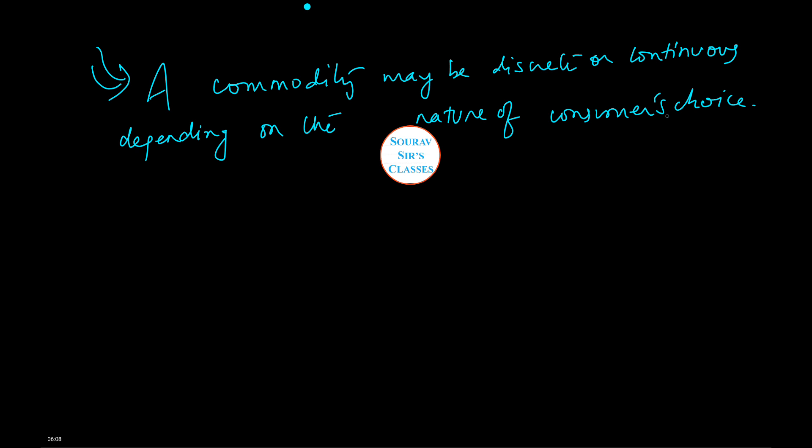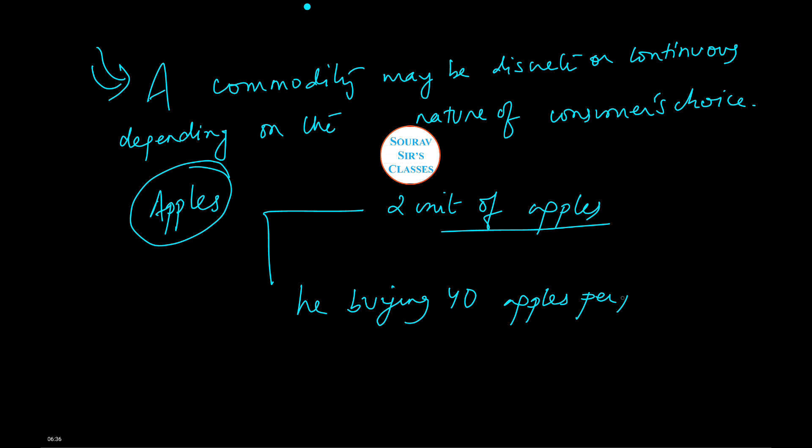Now what do we mean by this? Let me tell you. Say, for example, apples. So I am taking the example of apples. Now if a consumer buys, say, two units of apples, then it will be treated as a discrete good. But if we say that he is buying 40 apples per period, then apple will be referred to as a continuous good in this case.